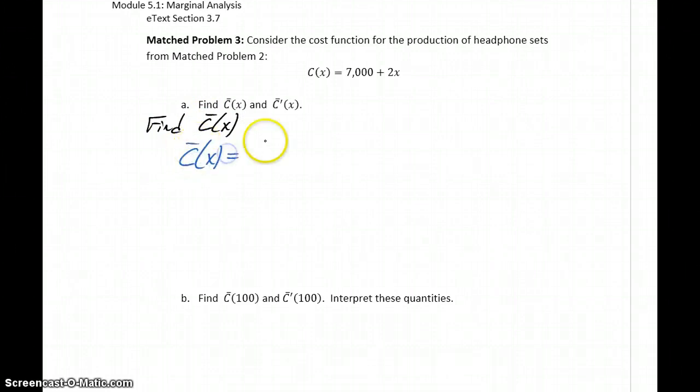Our average cost function is just the original cost function divided by x. So we'll get 7,000 plus 2x over x. Now technically at this point we're done. That is our average cost function.